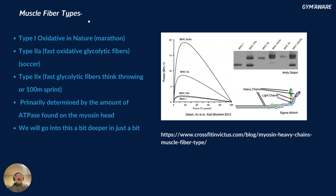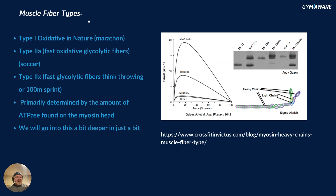There are also combinations of fiber types, as shown in this image — shout out to Evictus for creating it with Andy Galpin. Mixtures exist, so these categories are a general framework. Fiber type is primarily determined by the amount of ATPase found in the myosin head — that's the enzyme responsible for breaking ATP down into ADP and an inorganic phosphate ion, which ultimately determines the speed of the muscle fiber.